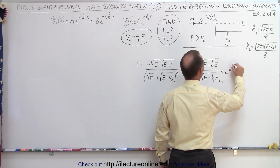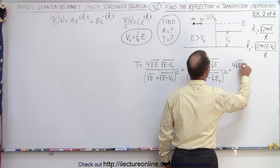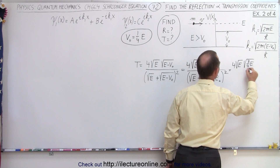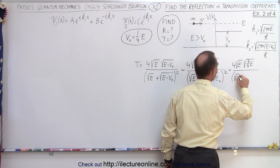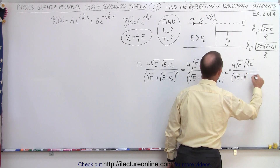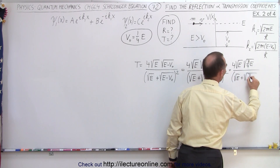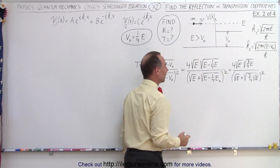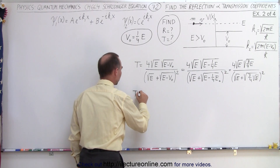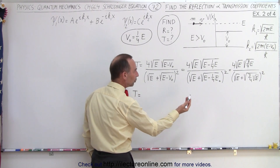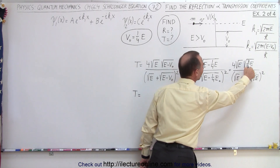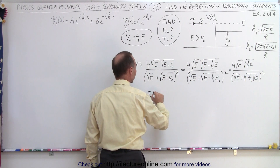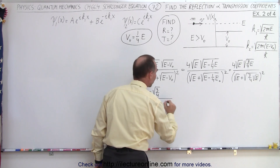So let's go ahead and simplify that. This becomes equal to 4 times the square root of E times the square root of 3/4 E, divided by the square root of E plus the square root of E minus that, which is 3/4 the square root of E, and that is squared. Simplifying a little bit more, the transmission coefficient is going to be equal to the square root of E times the square root of E, which is 4 times E times the square root of 3/4.